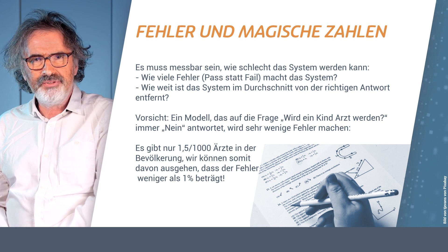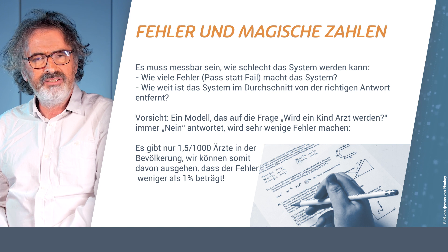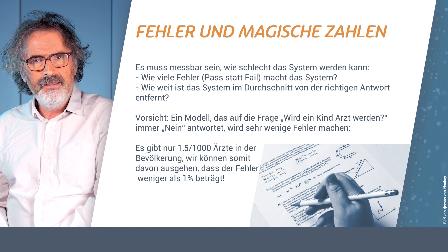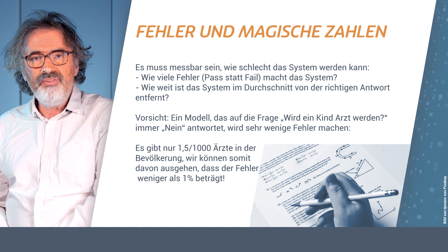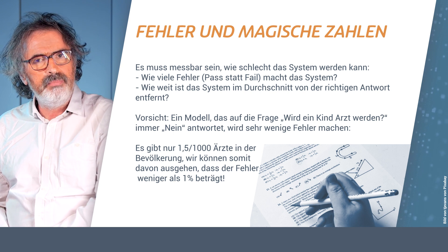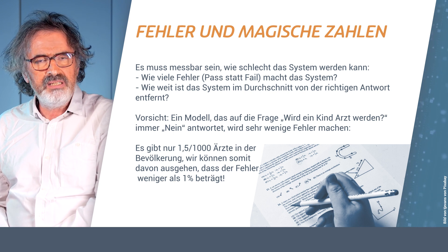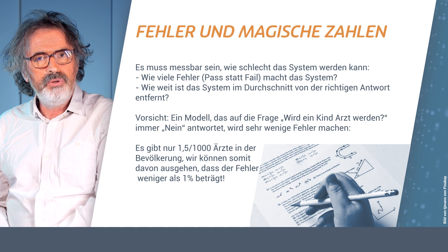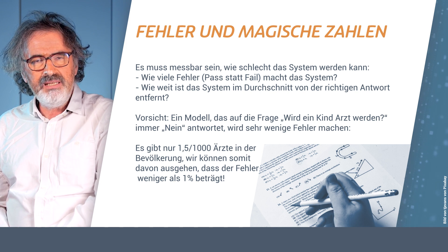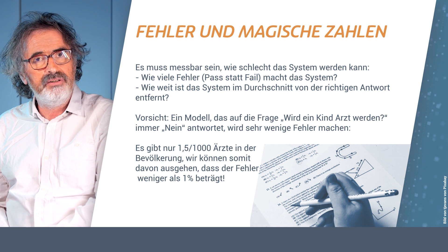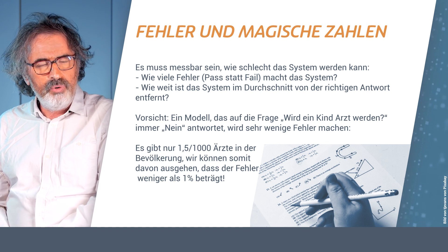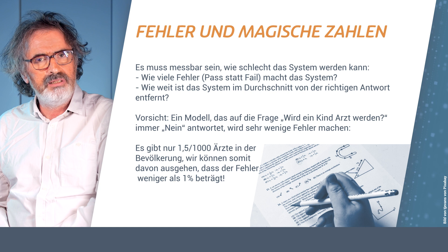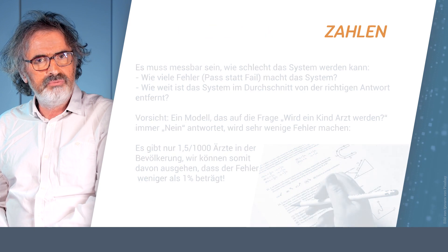Let's have an extreme example. Suppose I want to predict if a child is going to be a doctor or not. Then a system that will always inevitably predict 'no' will actually be very good under the criterion of the magic numbers, because in the population of a western country there are, on average, 1.5 doctors per 1,000 inhabitants — which means less than 1% error for a system that predicts nobody will ever become a doctor. This is addressed by people working in machine learning, but it is not always easy to read.